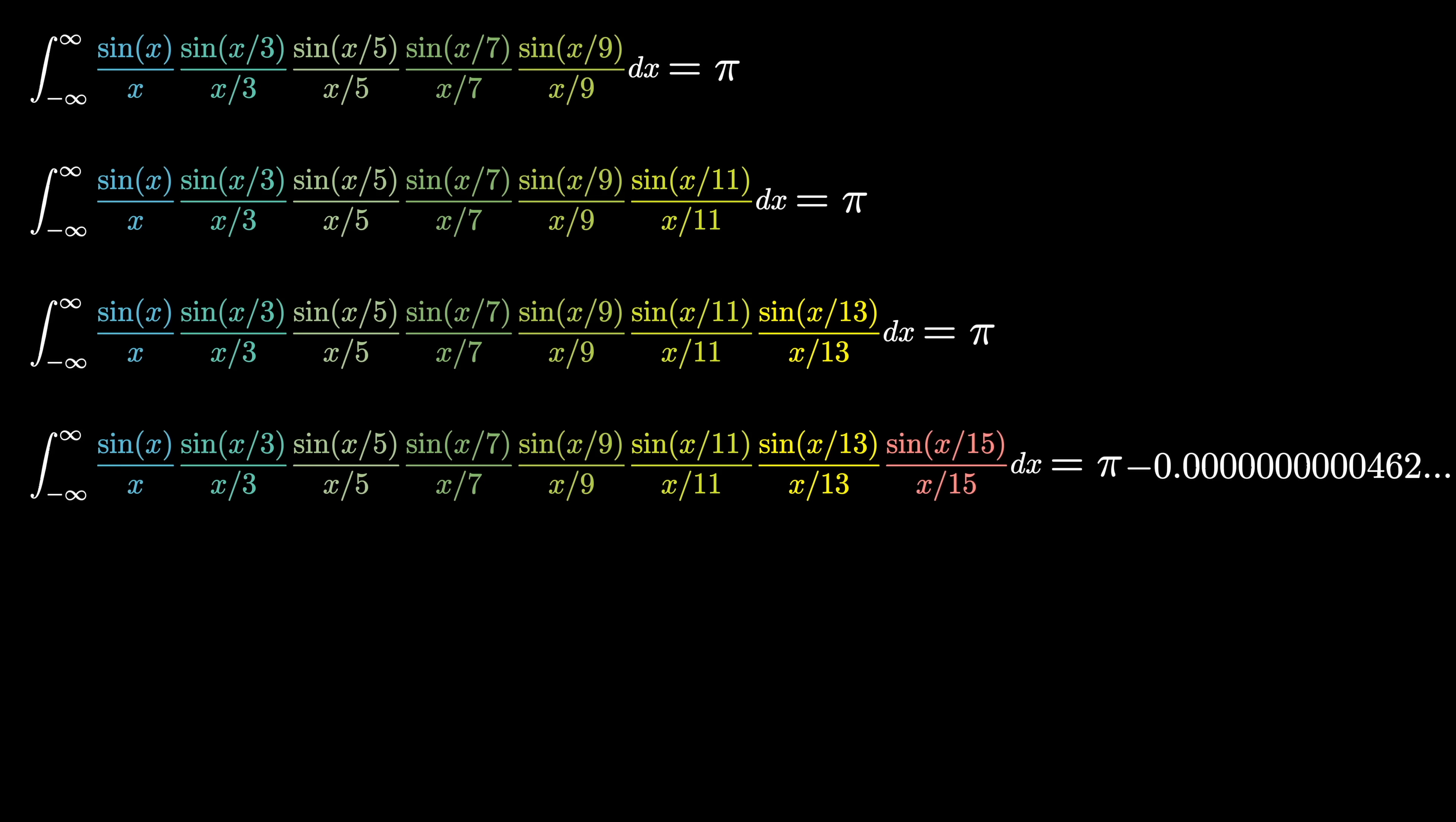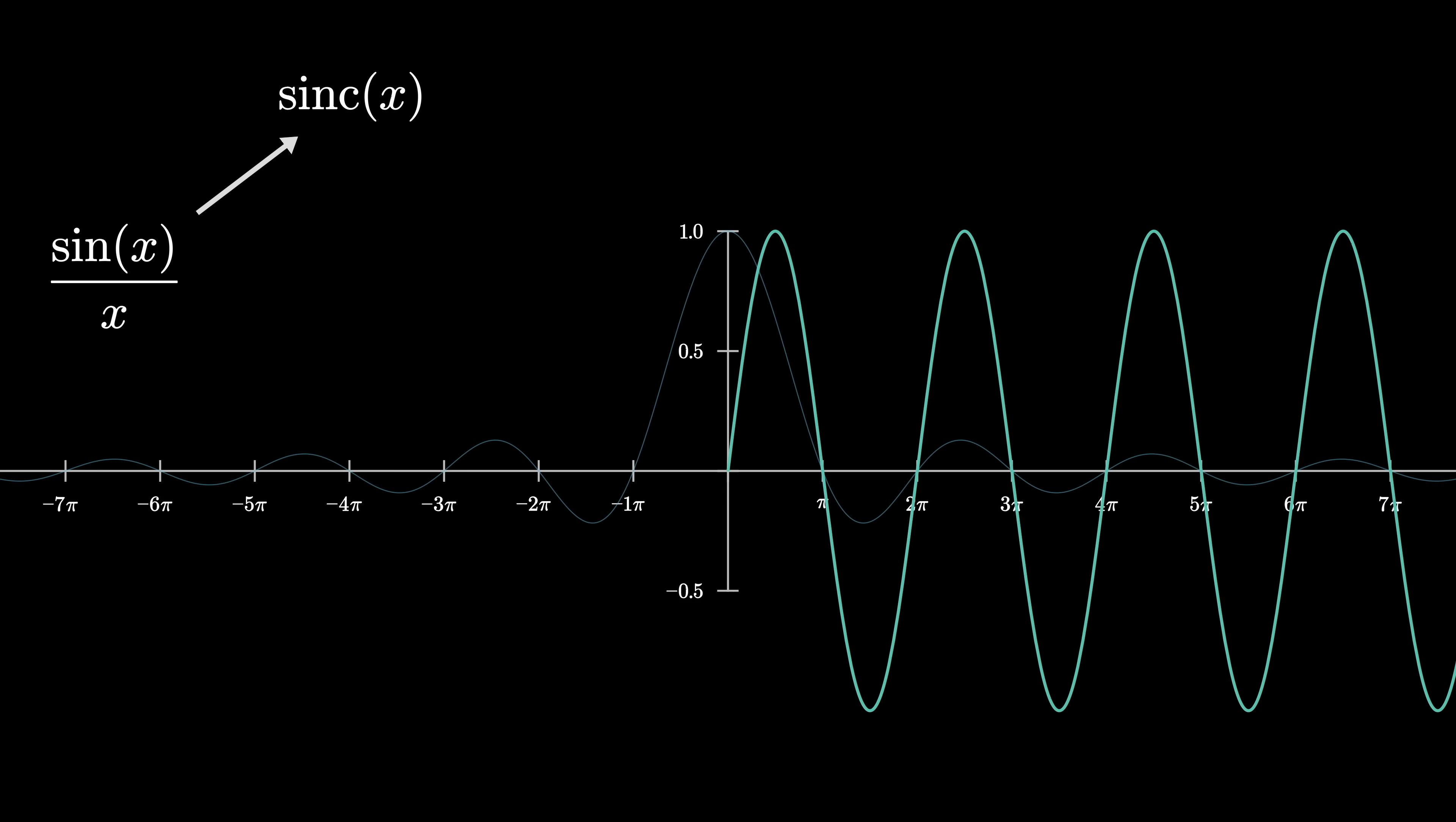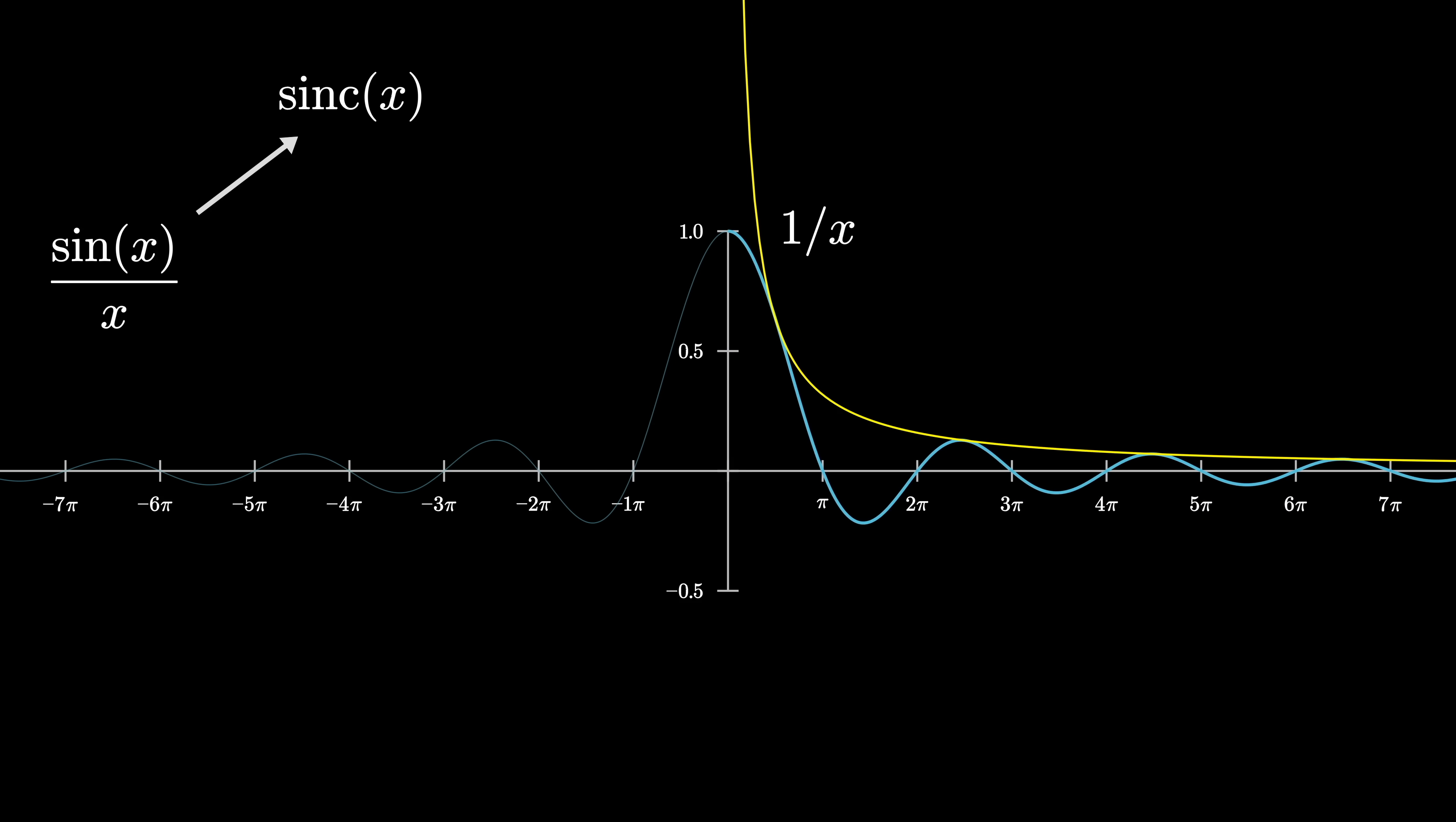Alright, let's dig into what's going on here. The main character in the story today is the function sine of x divided by x. This actually comes up commonly enough in math and engineering that it gets its own name, sinc. And the way you might think about it is by starting with a normal oscillating sine curve, and then sort of squishing it down as you get far away from zero by multiplying it by one over x.